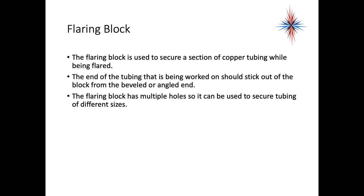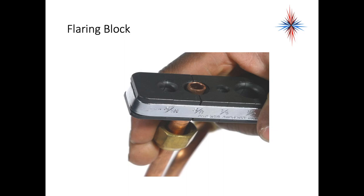A flaring block has multiple holes so it can be used to secure tubing of different sizes. This is an example of a flare block—most likely you have one of these in your toolkits someplace.